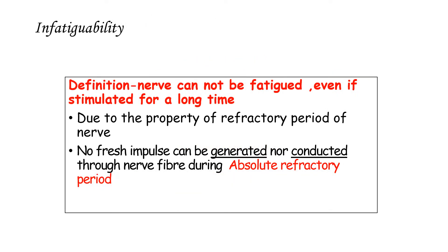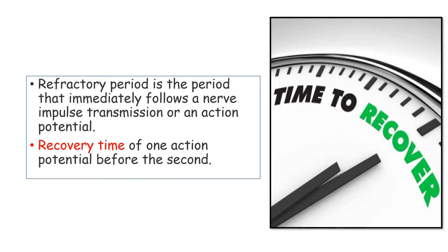The property of infatigability of the nerve means that the nerve cannot be fatigued, even if it is stimulated for a long time. The basis of this lies in the refractory period. No fresh impulse can be generated or conducted through the nerve fiber during the absolute refractory period, resulting in infatigability. The refractory period is the recovery time of one action potential before another can fire — the period that immediately follows a nerve impulse transmission.